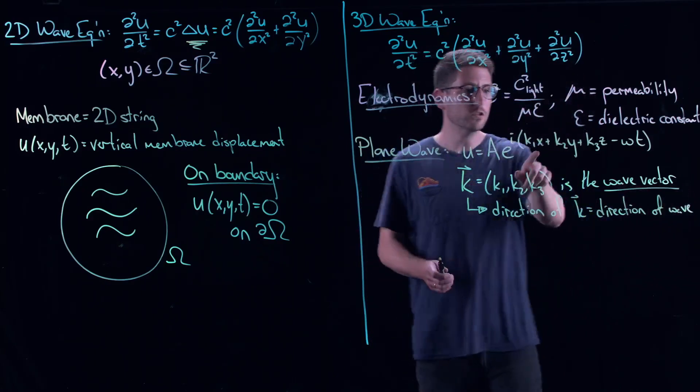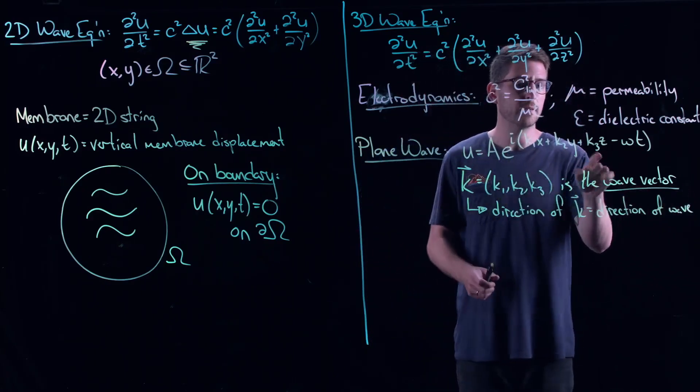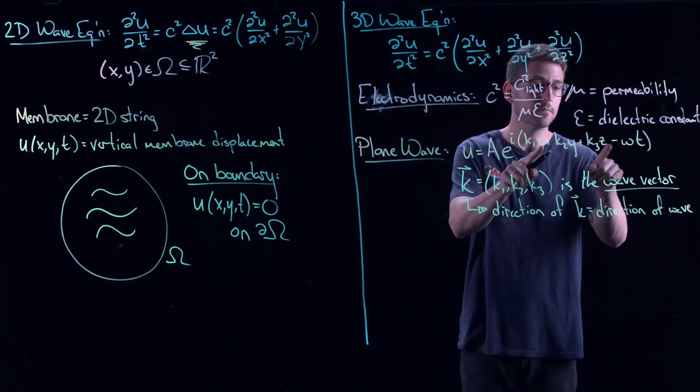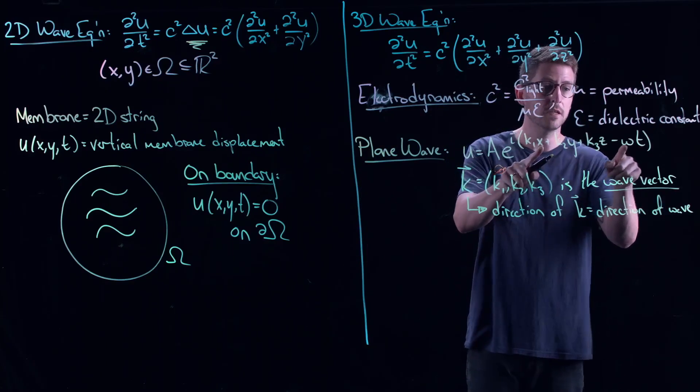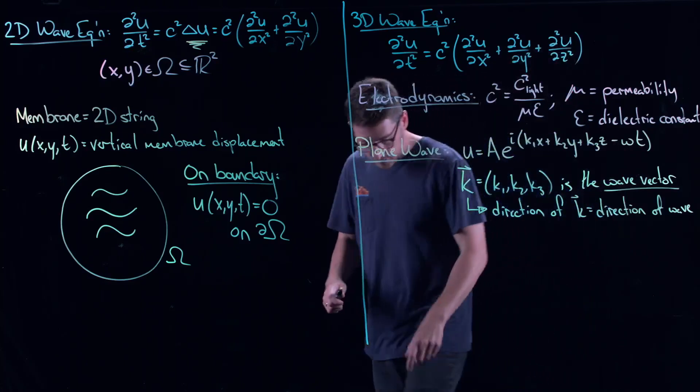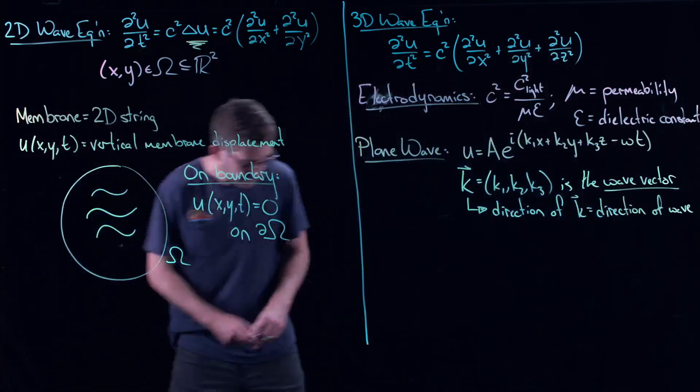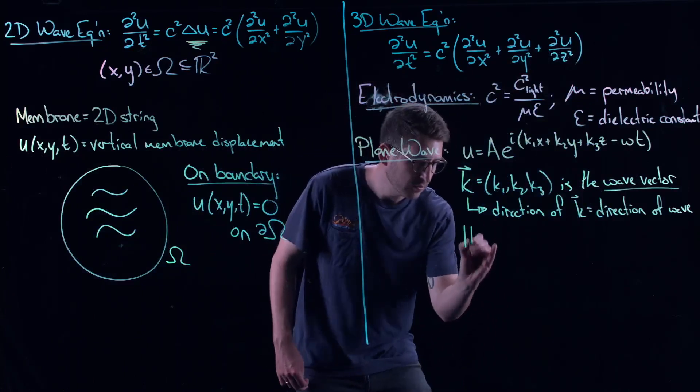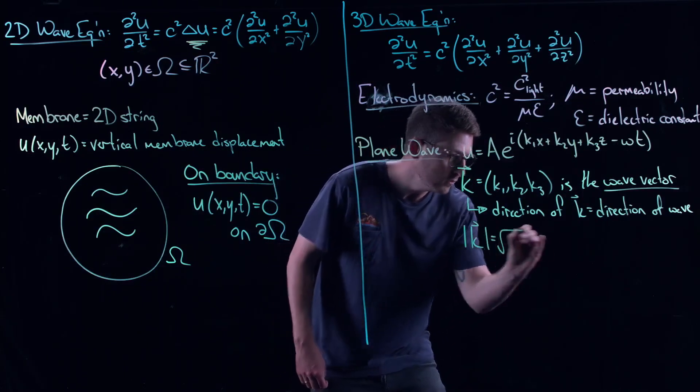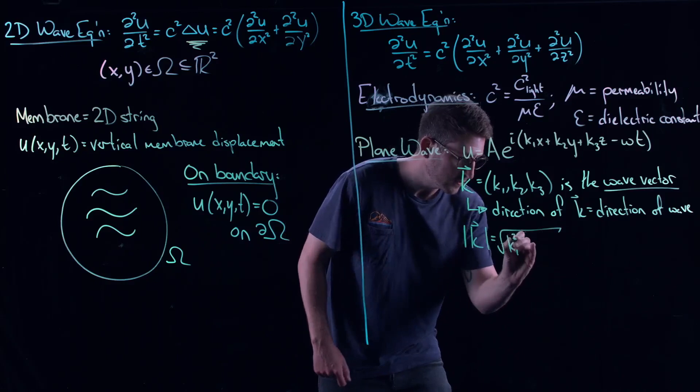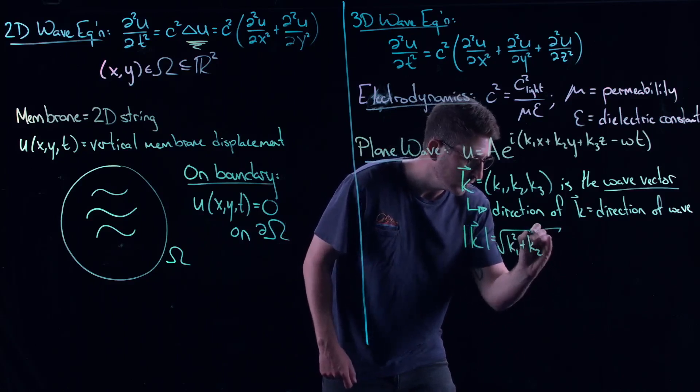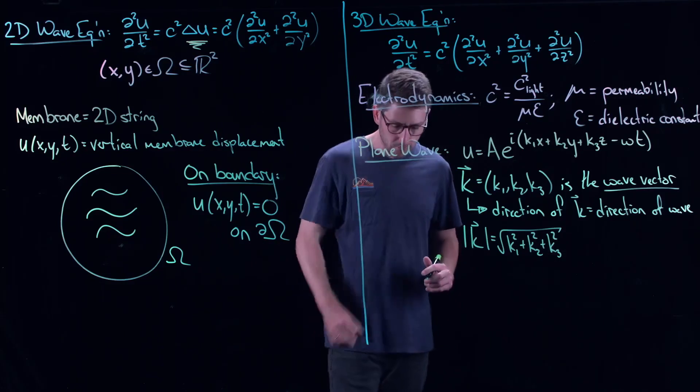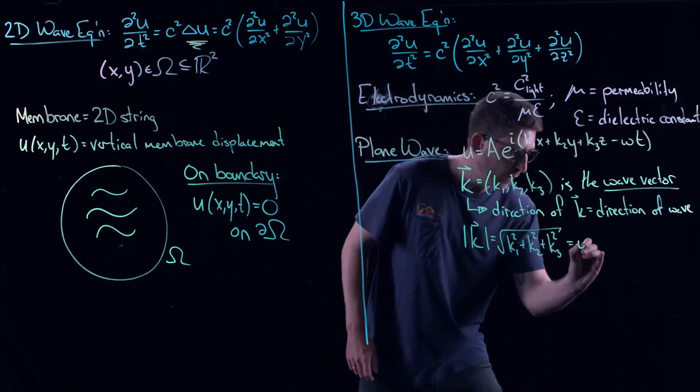So here, I didn't tell you what these things are. In fact, it's actually going to work for any k1, k2, and k3. But essentially what this is, the direction of this vector is the direction that the plane wave is moving in. So the direction of k as a vector equals the direction of wave. Now, if you were to just take out the y and the z dependents, this would look like my traveling wave solution from the last video.